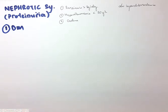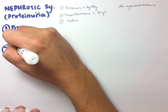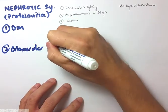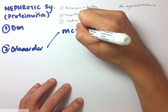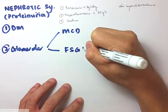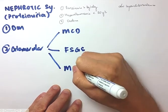The second commonest cause of nephrotic syndrome in an adult would be glomerular disease. And this includes minimal change disease, focal segmental glomerular sclerosis, and membranous nephropathy.